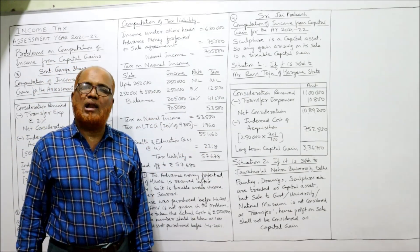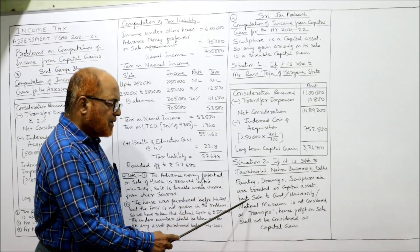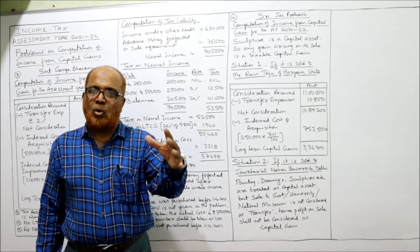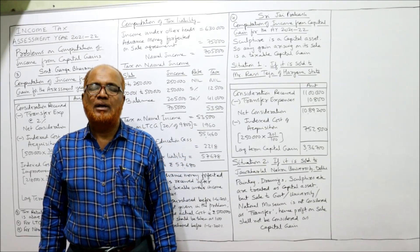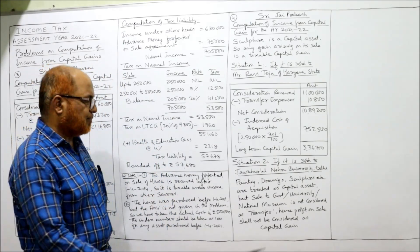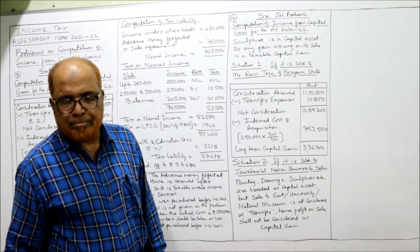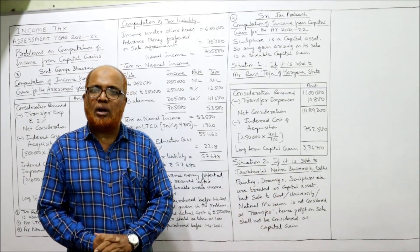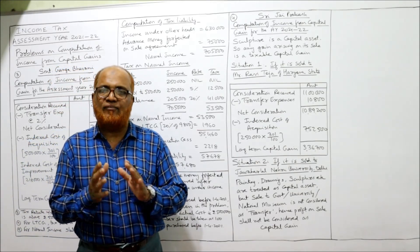Situation 2 — Sculpture sold to Jawaharlal Nehru University: paintings, drawings, sculptures are capital assets, but if sold to the government, a university, or a national museum, the sale will not be treated as a transfer. Since it is not considered a transfer, the profit on sale shall not be considered as capital gain — it is not taxable. That concludes both problems. In this video, Problems 3 and 4 have been explained; the fifth problem will be done in the next video.